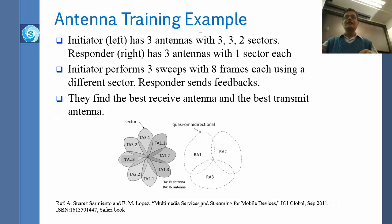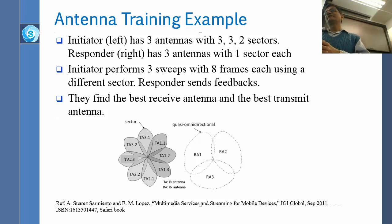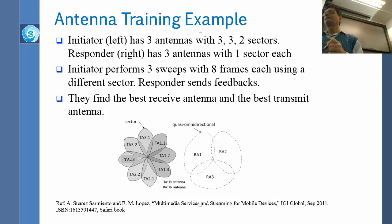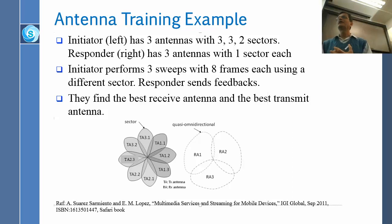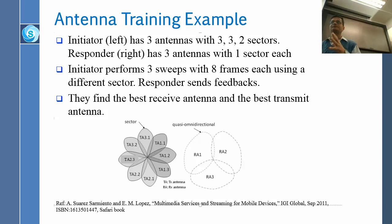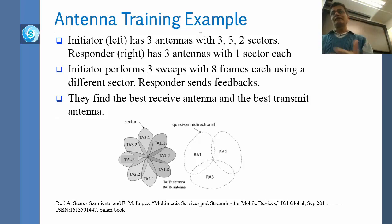In cellular networks, if they use different frequencies for uplink and downlink, then you have to do antenna training separately in both directions. If you are using the same frequency, they will have the same behavior. Now you see what new challenges come with millimeter waves — directionality is a big issue. Directionality is good, but directionality has its own cost.